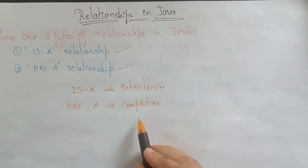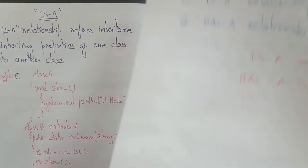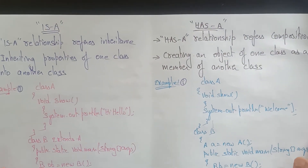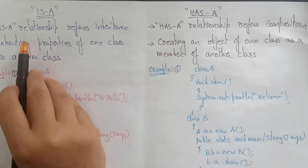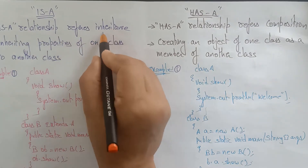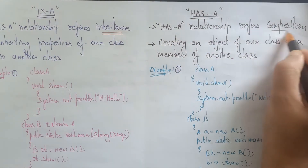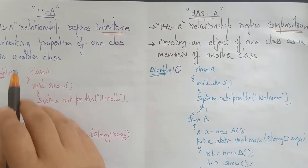Inheriting properties of one class to another class is called 'is-a' inheritance, and creating an object of one class as a member of another class is called a 'has-a' relationship. So 'is-a' refers to inheritance and 'has-a' refers to composition.